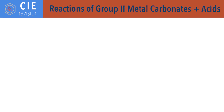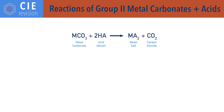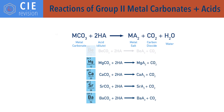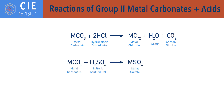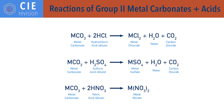Group 2 metal carbonates don't react with water, but do react with dilute acids to form a metal salt, carbon dioxide, and water, with a general reaction of metal carbonate plus acid to salt plus carbon dioxide plus water. The acid used determines the salt formed: metal carbonate plus dilute hydrochloric acid forms metal chloride (MCl₂), water, and carbon dioxide; metal carbonate plus dilute sulfuric acid forms metal sulfate (MSO₄), water, and carbon dioxide; metal carbonate plus dilute nitric acid forms metal nitrate (M(NO₃)₂), water, and carbon dioxide.